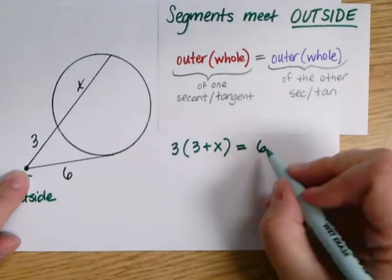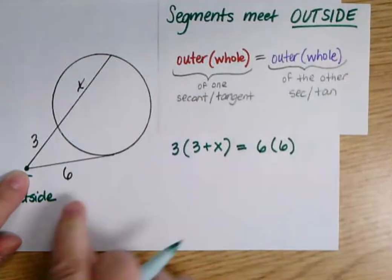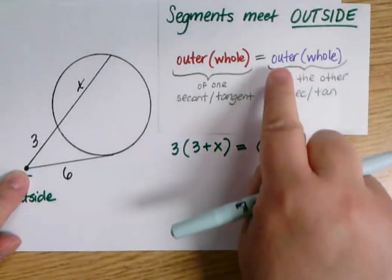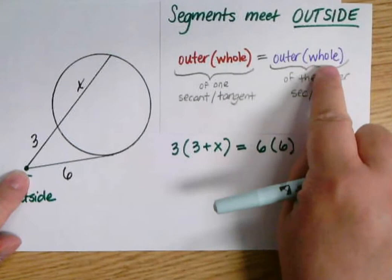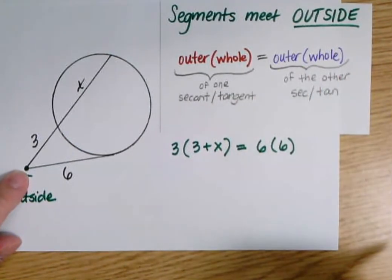Well, the whole thing is six. When you have a tangent segment like this, the outer part is the whole thing. So you basically, for these two, you pretty much end up just multiplying it times itself. And that's fine. Works perfectly.